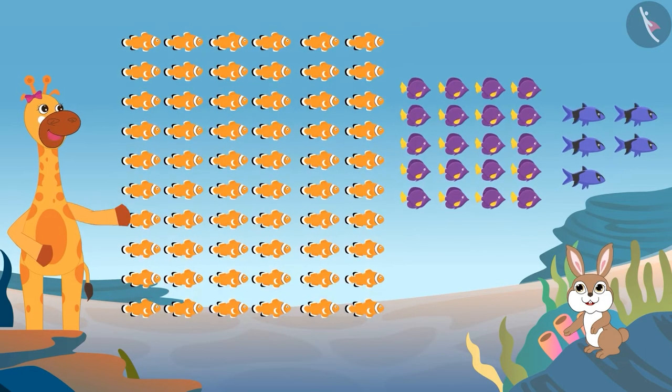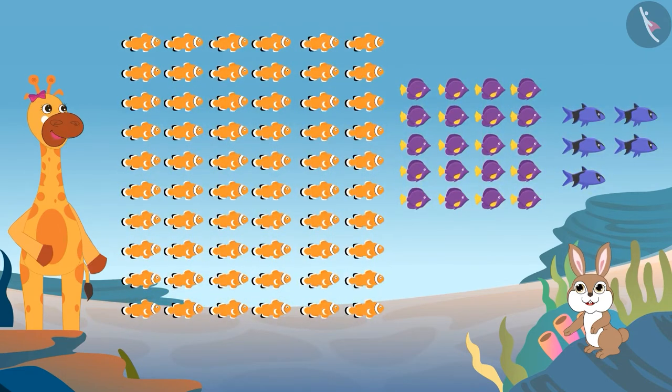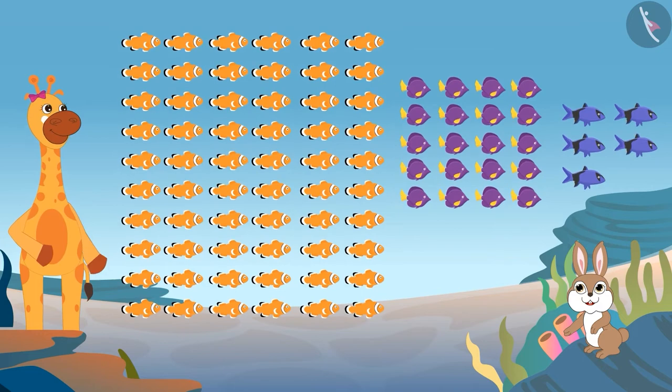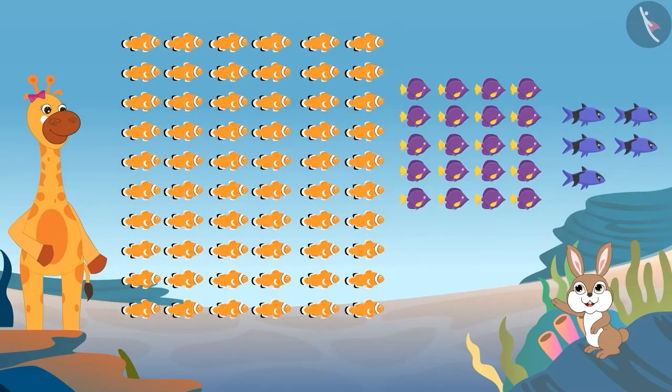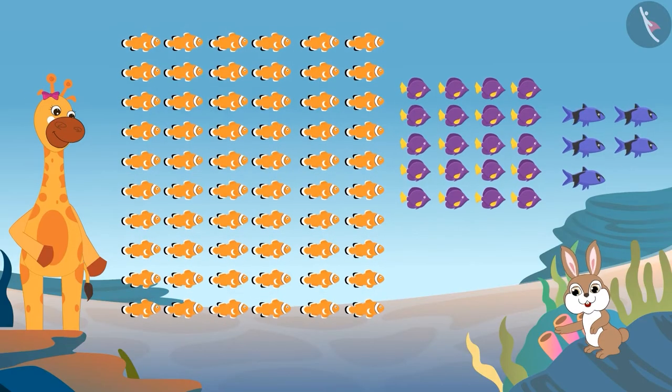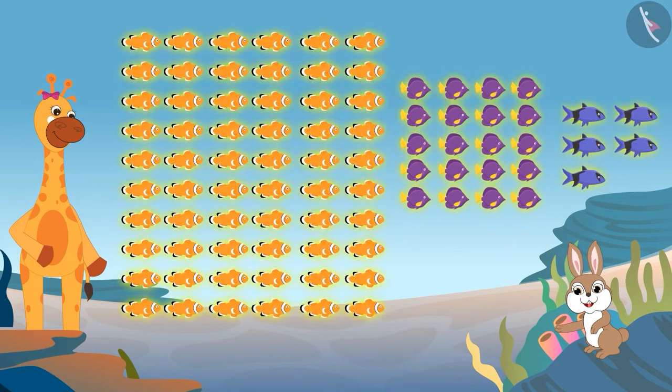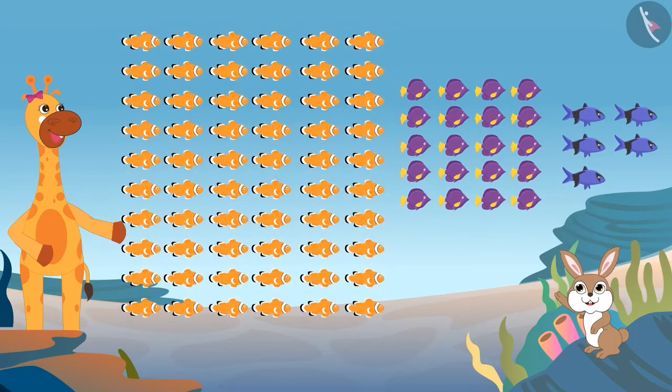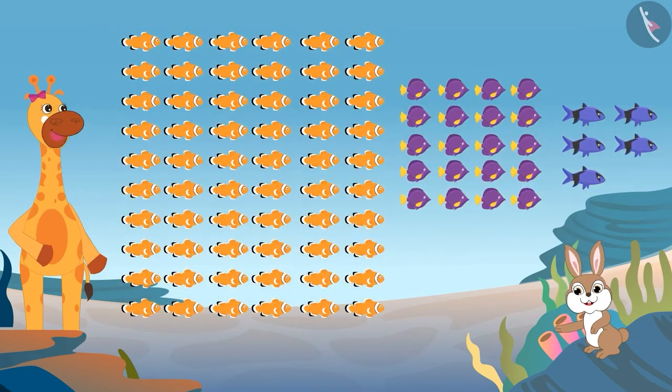Wow Rani, look at the different types of fish. All of them have different colors too. Gaffee, did you know that a lot of fishes together is called a school? Oh wow, can you find a school of 60 fishes?